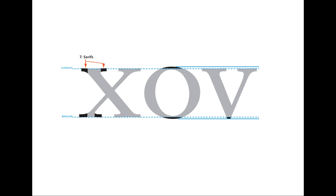Moving on to number seven. These little flag-like structures coming off the strokes — you can see them on all four sides of the x, top and bottom, and also on the v. These are called serifs. You've probably already encountered this term.